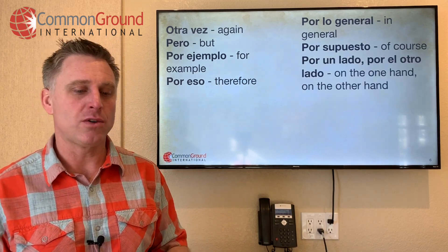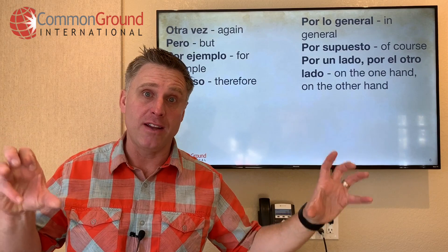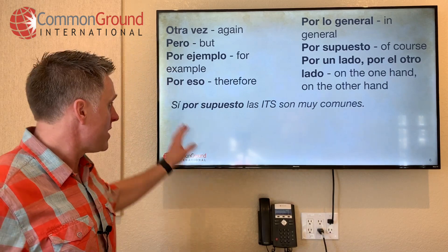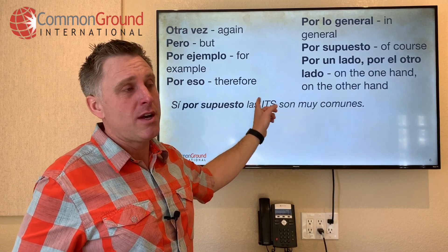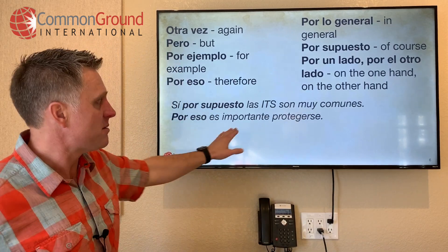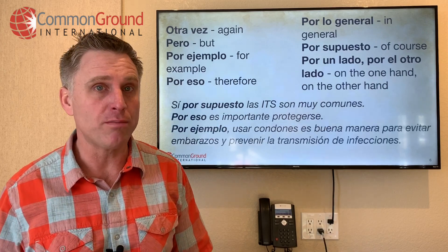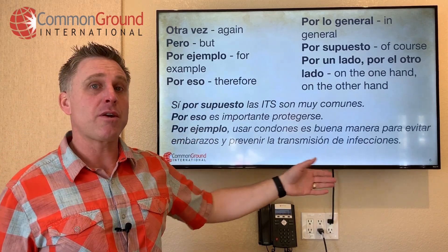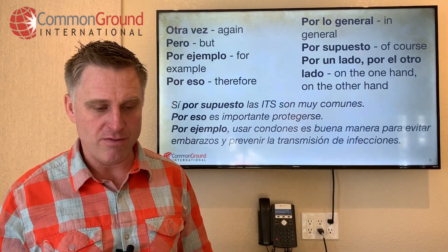Por un lado / por otro lado — on the one hand / on the other hand. Por supuesto, las ETS son muy comunes — of course, STIs (infecciones de transmisión sexual) are very common. Por eso es importante protegerse — that's why it's important to protect yourself. Por ejemplo, usar condones es una buena manera para evitar embarazos y prevenir la transmisión de infecciones — for example, using condoms is a great way to avoid pregnancies and prevent the transmission of infections.